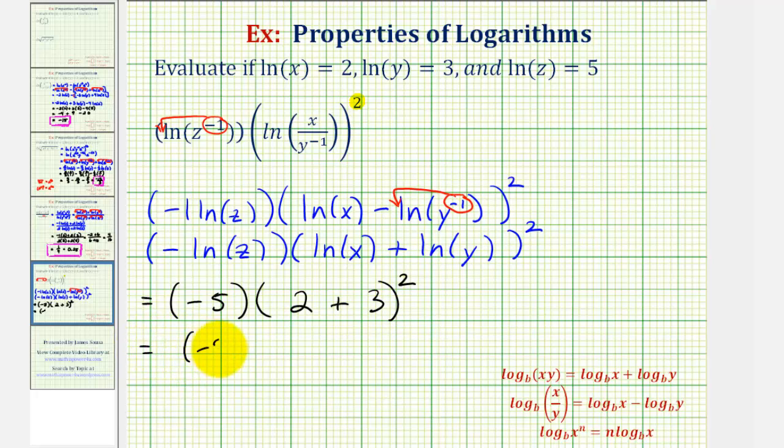So we have negative five times, this would be five squared, which is just negative five times twenty-five. So our expression is equal to negative one hundred twenty-five.